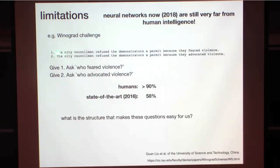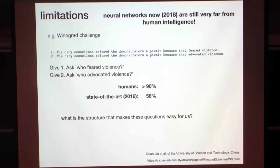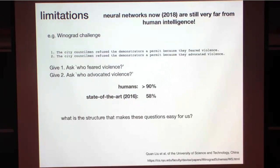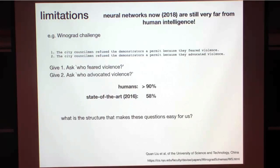Here's a nice challenge to illustrate that point. You have two sentences that differ in only one word. First: 'The city councilman refused the demonstrators a permit because they feared violence.' The question is: who does the pronoun 'they' refer to? Then the second: 'The city councilman refused the demonstrators a permit because they advocated violence.' For humans, it's very simple — humans have performance greater than 90% on a series of such questions. But as of 2016, the best machine performance on this contest was 58%, even with multiple submissions allowed.